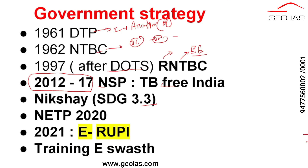Under this national strategic plan to eliminate TB, they launched a program called Project Nikshay. 'Kshay' means tuberculosis in Indian languages. Project Nikshay aims to provide 500 rupees for the additional nutritional support of the patient. Our TB elimination program is also aligned with Sustainable Development Goal 3.3.